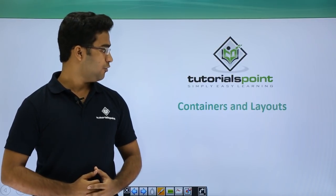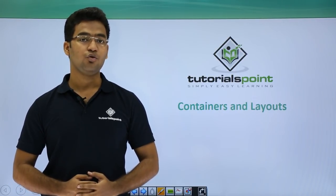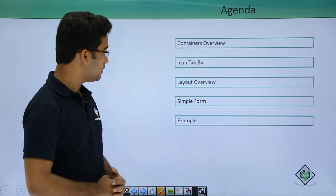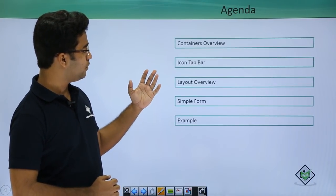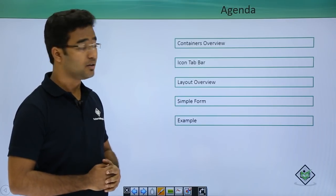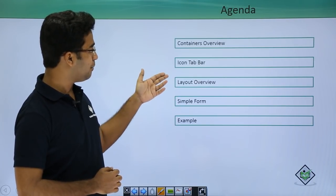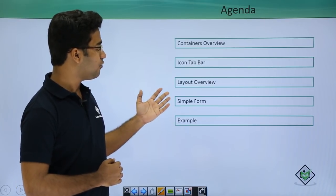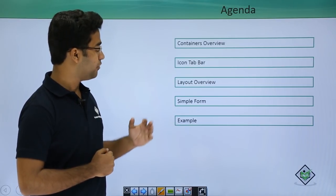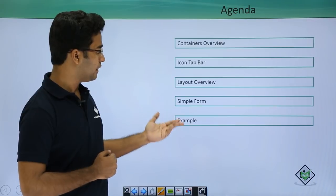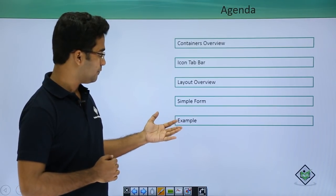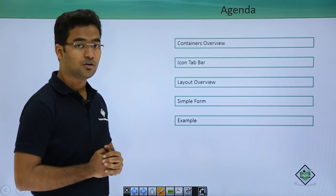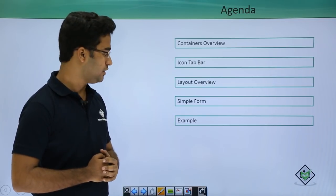In this video we will see what containers and layouts are and how to use them in SAPUI5. Let us see the agenda for this session. First, I will give a brief overview of what a container is and explain an example — the icon tab bar control — then we will see what a layout is, with an example of simple form, and afterwards we will demonstrate all these containers and layouts using a SAPUI5 application.